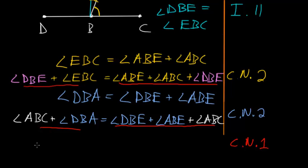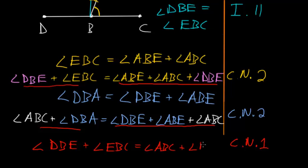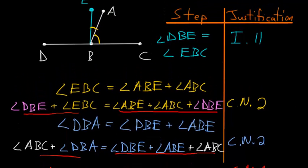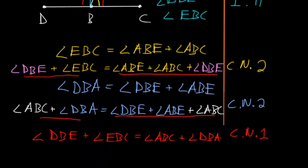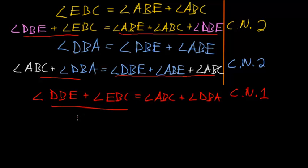This expression and this expression are both equal to these three angles, so we can conclude that angle DBE plus angle EBC is equal to angle ABC plus angle DBA. This is important because angle DBE and angle EBC are each right angles, as established when we constructed line BE using Book 1, Proposition 11. So our two original angles, ABC and DBA, are equal to two right angles — which is exactly what we sought to prove. QED.